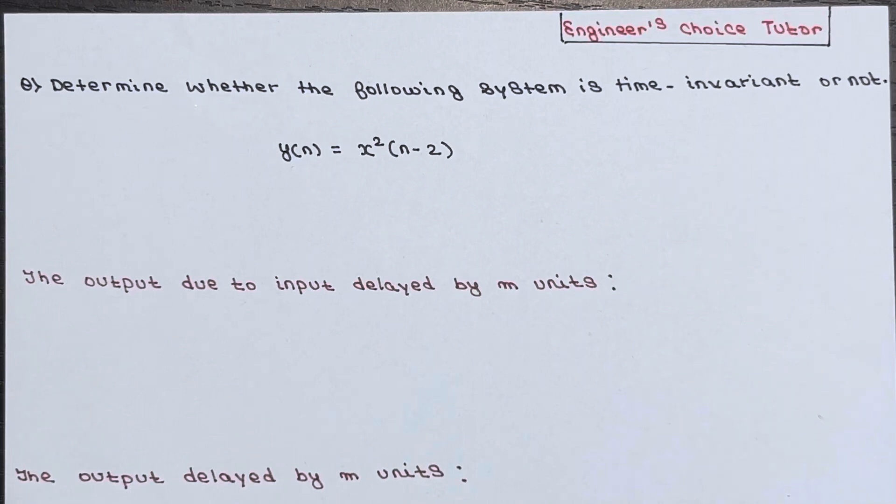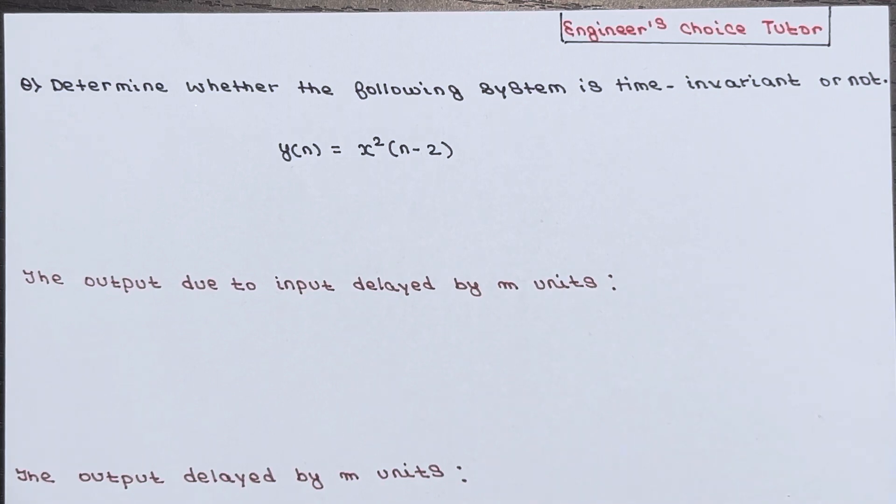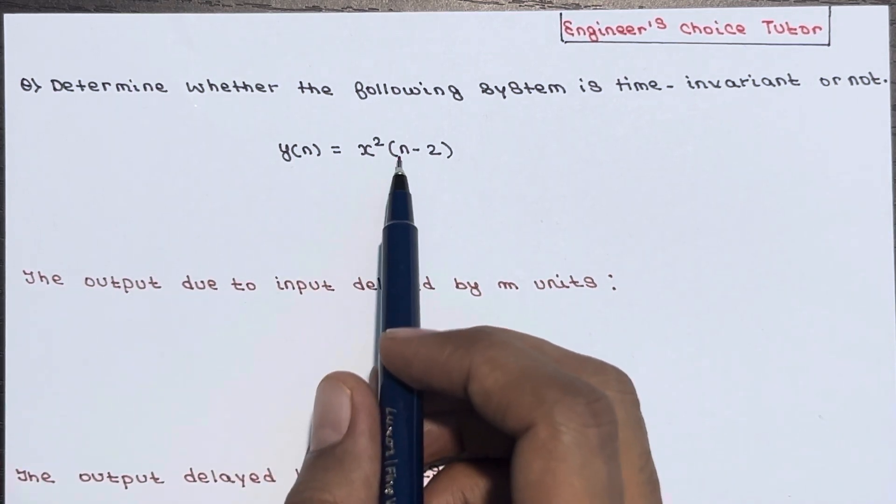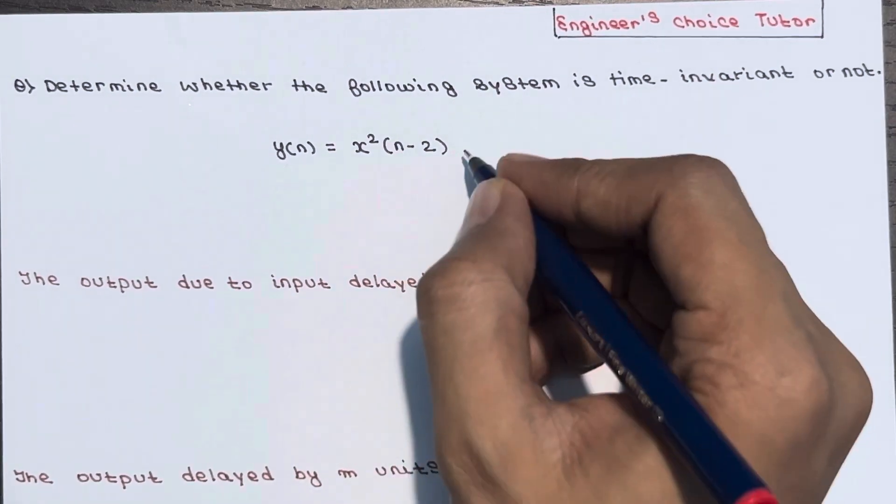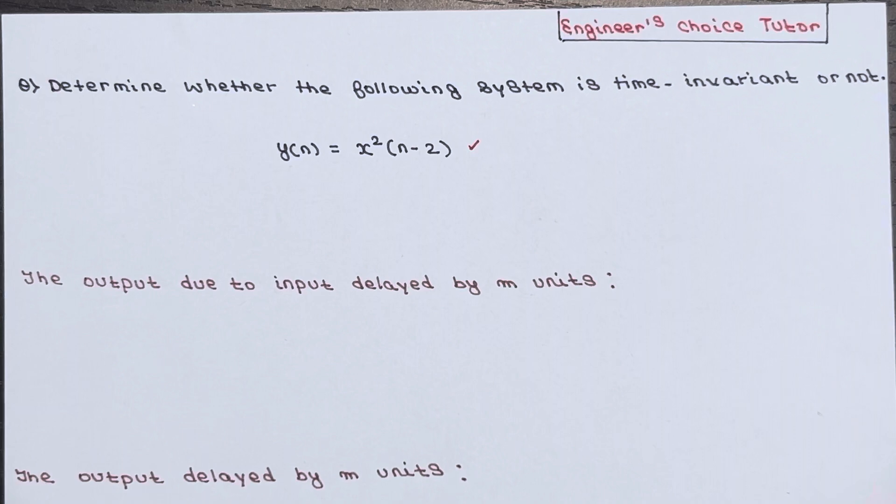Hi everyone. In today's lecture, we are going to deal with a numerical based on time invariant or time variant systems. So the question will be: determine whether the following system is time invariant or not. The system equation is given as y(n) = x²(n-2). So this is the system equation.